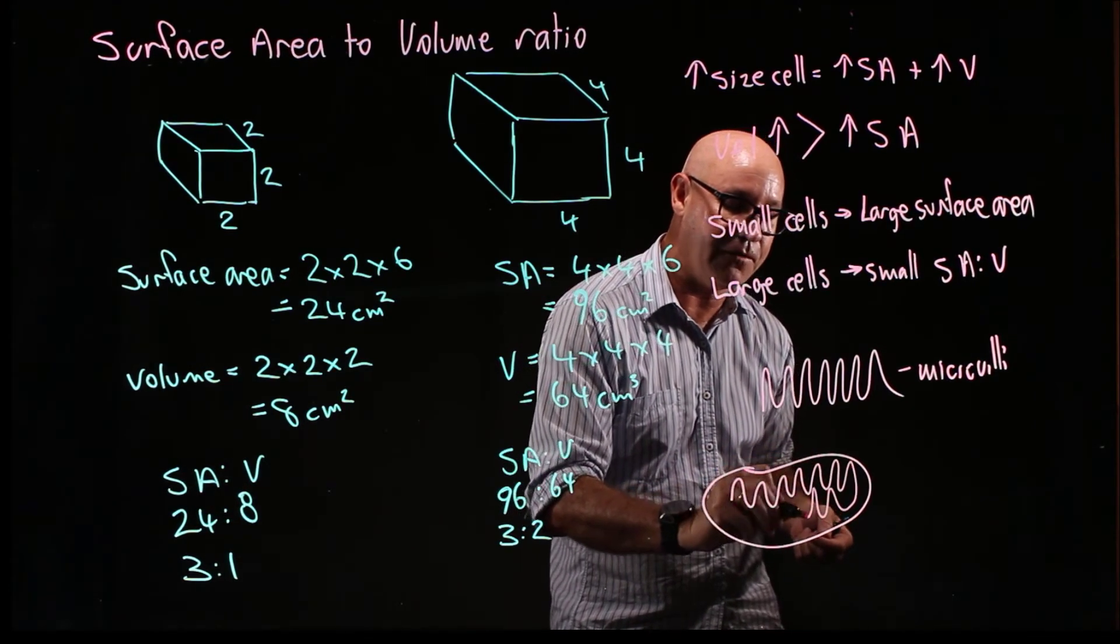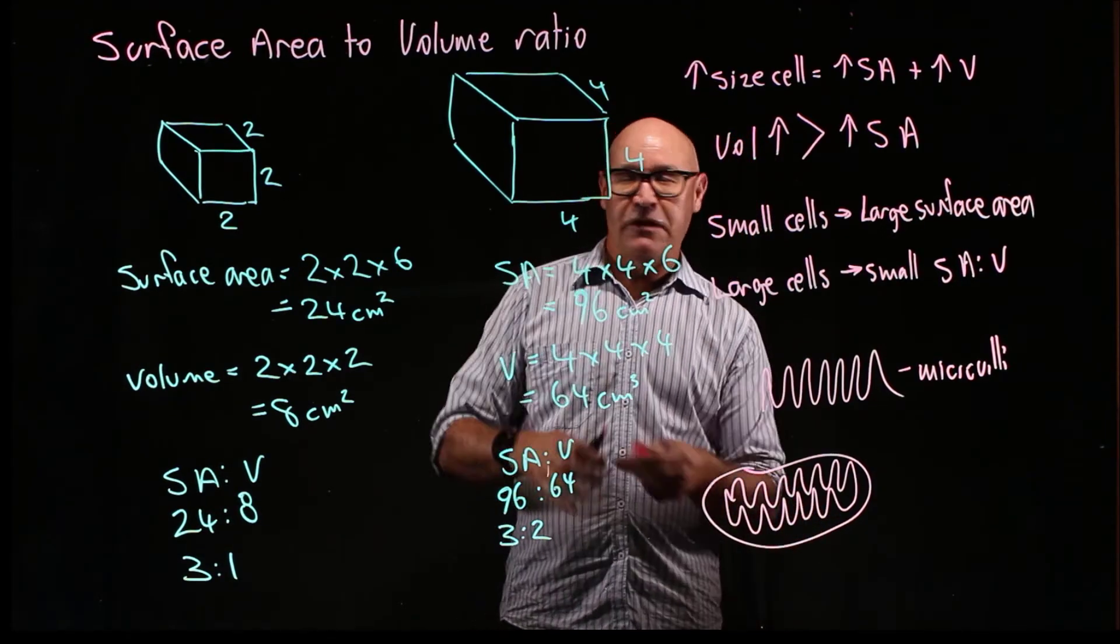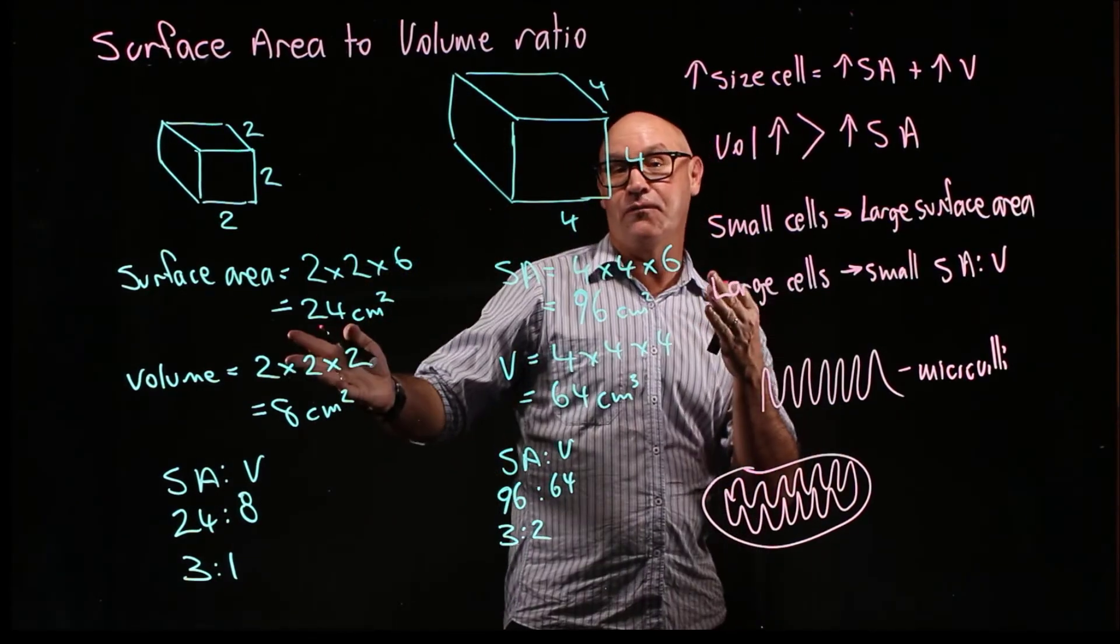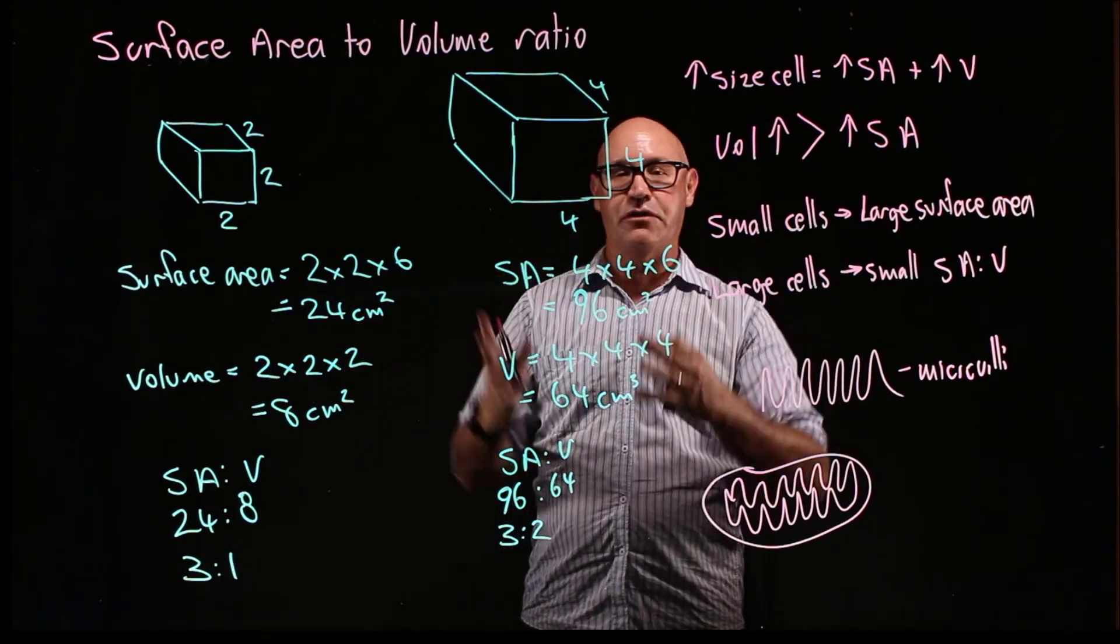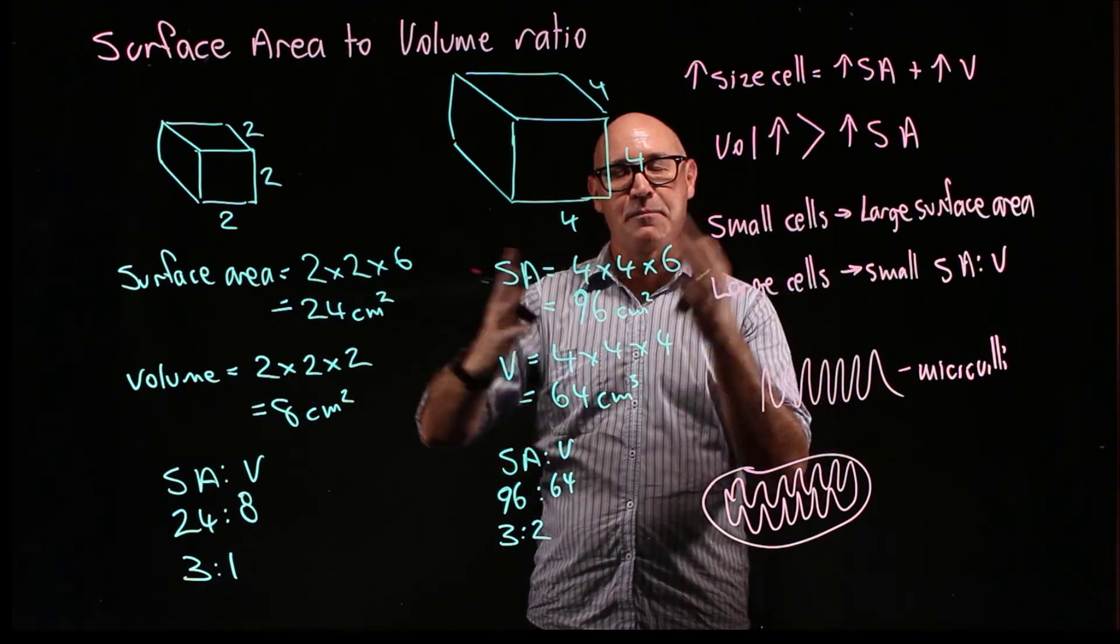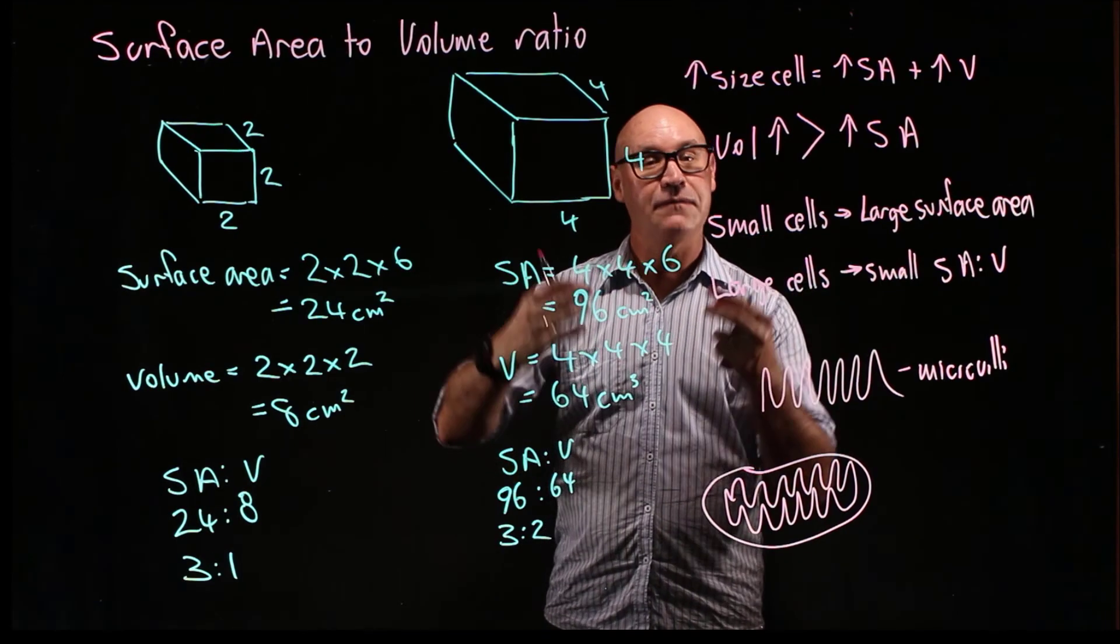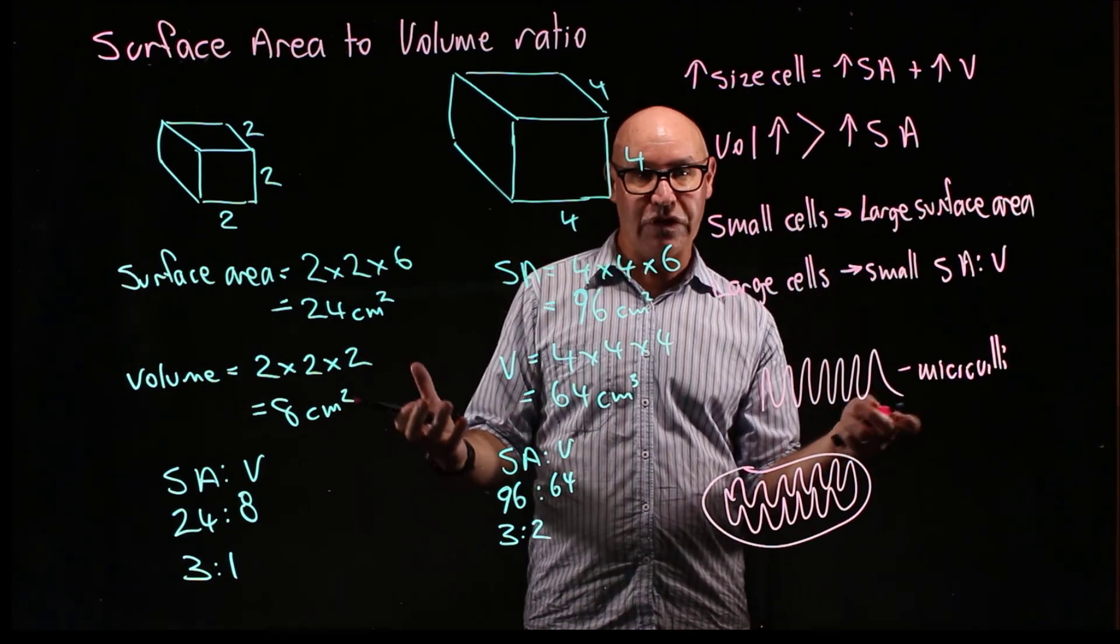So take-home message here: surface area to volume ratio is very important. As we increase the size of the cell, both the volume and the surface area increase. However, the volume increases more than the surface area. So bigger cells, more metabolic activity, the surface area can't cope with it. So that's why we have small cells. Multi-cellular organisms are made of multiple small cells.